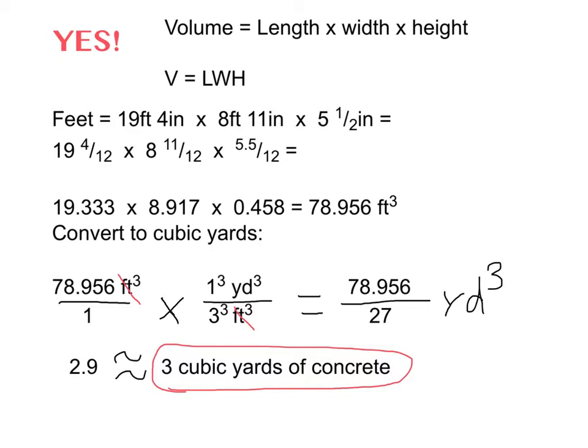And then to convert the cubic feet to cubic yards, we need to remember that there are 3 feet in a yard. So our unit multiplier is 1 cubic yard over 3 cubic feet. And that gets our cubic feet to cross-cancel so that we're left with an answer that's in cubic yards.